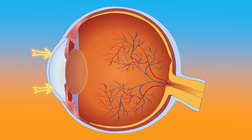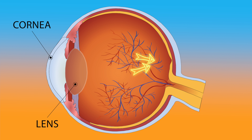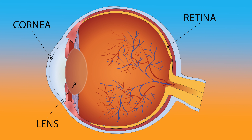Incoming light first passes through the cornea, or the transparent front surface of the eye, and the lens, which helps to focus light onto the retina. The retina is a layer of tissue which lines the back of the eye. It takes the incoming light signals and sends them along the optic nerve to the visual cortex in the brain, allowing us to see.